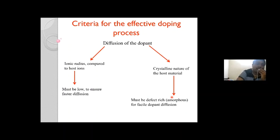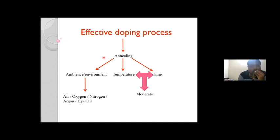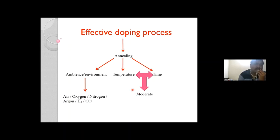The doping process can then proceed more easily. Effective doping also depends on the annealing ambience — whether you anneal in air, oxygen, nitrogen, or an inert atmosphere — and on temperature and time, which must be moderate depending on the host matrix so that no impure phases are observed.